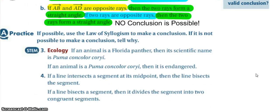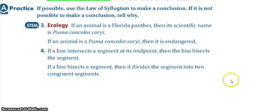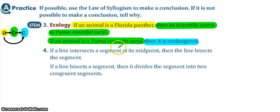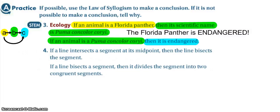Try three and four on your own, then come back for the answer. For number three, color coded: if an animal is a Florida panther, then its scientific name is Puma concolor coryi. Then we restate: if an animal is a Puma concolor coryi, then it is endangered. Since we restate the same thing and go on to a new conclusion, we can use the law of syllogism to conclude that the Florida panther is an endangered species.